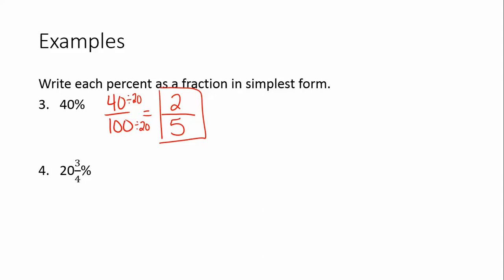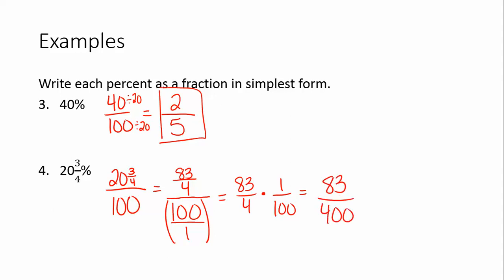And if you haven't paused the video yet, try to do that here and see if you can get this one on your own. So we have 20 and 3 fourths over 100. Remember, it's always out of 100. But we want to change 20 and 3 fourths to an improper fraction. So it's 20 times 4 plus 3. So it's 83 over 4 out of 100. But dividing by a fraction is the same as multiplying by the reciprocal. So we're going to do 83 over 4 times 1 over 100. And we get 83 over 400 when we multiply across.